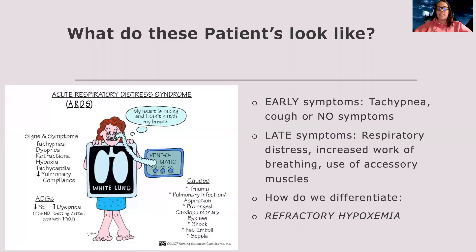What do patients with ARDS look like? Early symptoms are a rapid respiratory rate or tachypnea, a cough, and sometimes no symptoms. Late symptoms include respiratory distress or dyspnea and increased work of breathing, using accessory muscles. What differentiates ARDS is that we're giving more and more oxygen and their levels are not getting any better — nothing is working. Normally, putting a patient on oxygen or a mask helps, but in these patients, it does not get better.